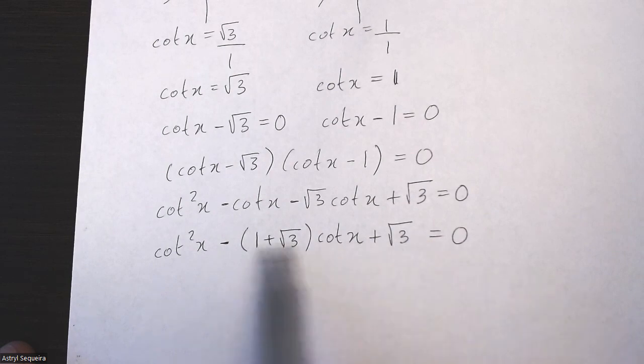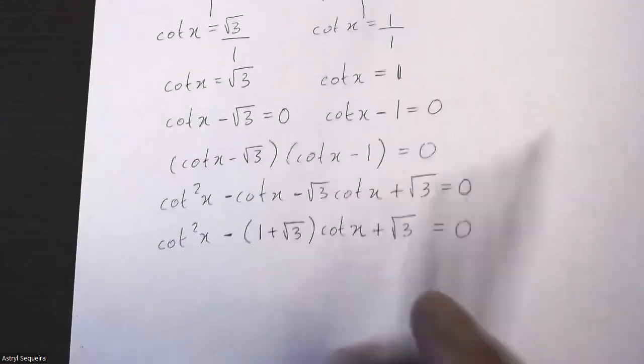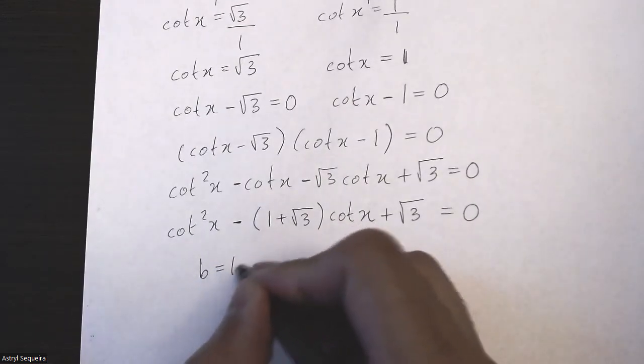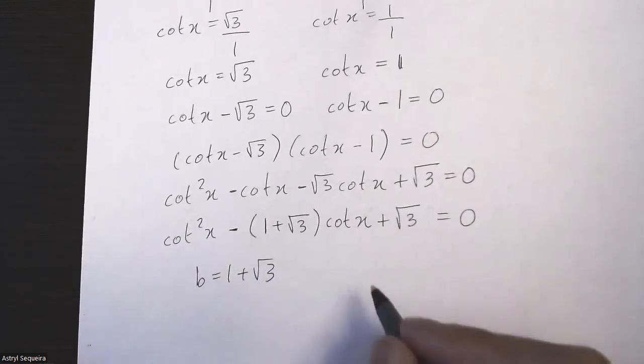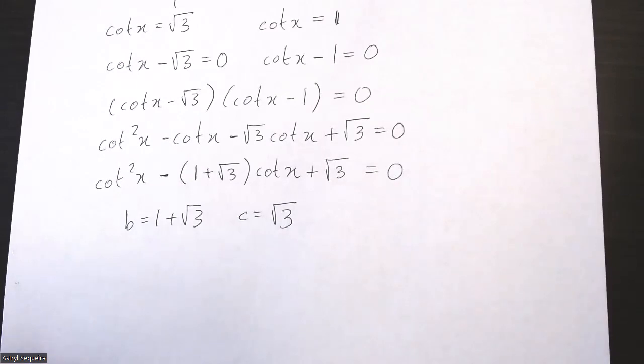So now I can compare this equation to the original equation. b is just 1 + √3, and c is just my final term there, which is √3.